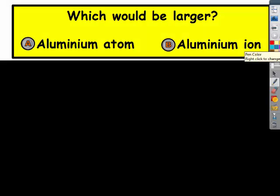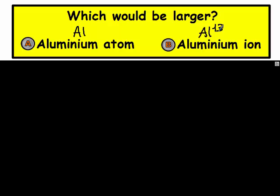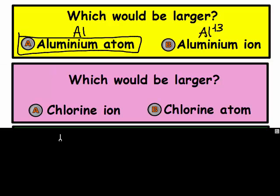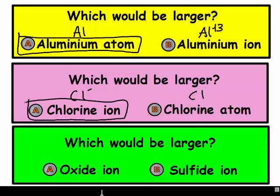So which would be larger? Aluminum atom or aluminum ion? Aluminum ion is positive three, and remember that positive ions are always smaller than what make them up. Pause the video and try this one on your own. Fluorine ion is negative. Fluorine atom, no charge. Negative is always larger than what made it up.